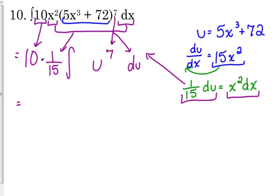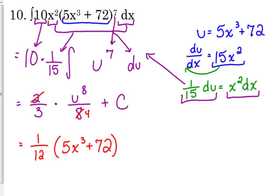So, 10 over 15 reduces to, those are both, the factor of 5 reduces to 2 thirds. The antiderivative of u to the 7th is u to the 8th over 8 plus c. 2 thirds times 1 eighth is 1/12, because 2 over 8 leads us to 4, 3 times 4 is 12. My u was 5x cubed plus 72. That's to the 8th power plus c. Magic happened. That's the answer to it.